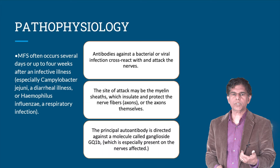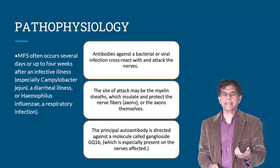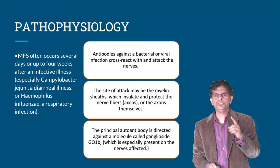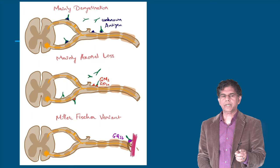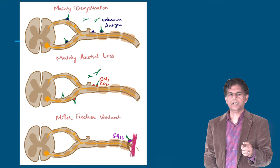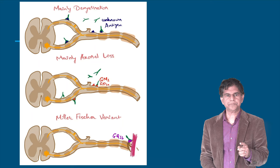The site of the attack may be the myelin sheath, which insulates and protects the nerve fibers, or the axons themselves. The principal autoantibody is directed against a molecule called ganglioside GQ1B — remember GQ1B. Looking at the diagram, the first two images show regular Guillain-Barré Syndrome and the last shows Miller-Fisher Syndrome, with the principal autoantibody against ganglioside GQ1B.